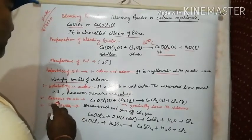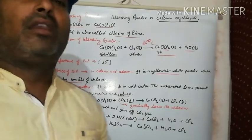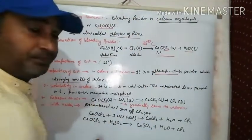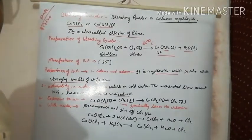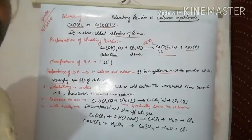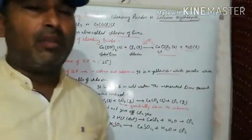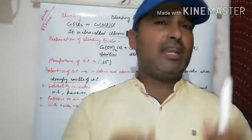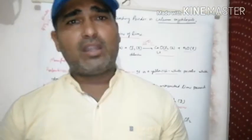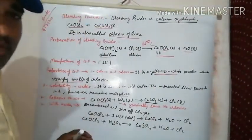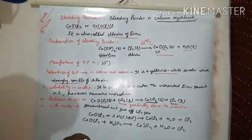Third property - exposure to air. When bleaching powder reacts with carbon dioxide present in air, it slowly and gradually loses its chlorine. When bleaching powder reacts with CO₂ in air, it forms solid calcium carbonate and releases chlorine gas.